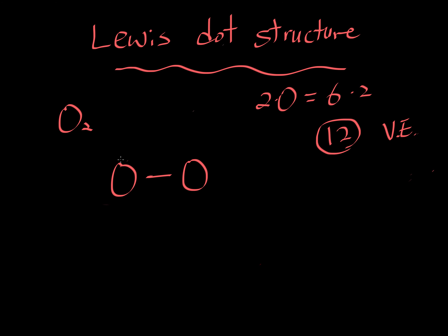Let's put five electrons on each side — one, two, three, four, five on each oxygen. That's a total of 12 electrons. But let's check the octet rule, which means you need to have eight around each atom. Left oxygen: one, two, three, four, five, six, seven — only seven. Same on the right: one, two, three, four, five, six, seven — doesn't satisfy the octet rule.